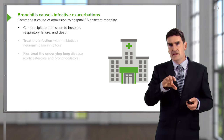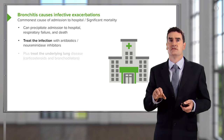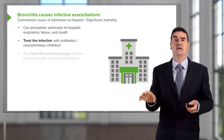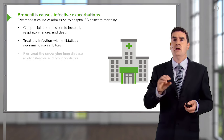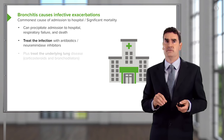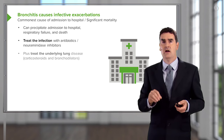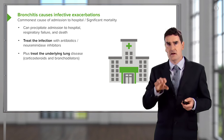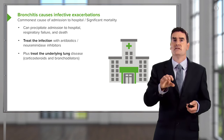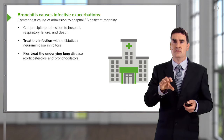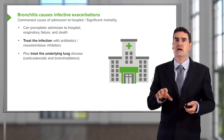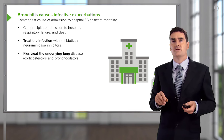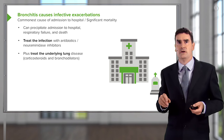In these circumstances, treatment with antibiotics — or a neuraminidase inhibitor if it's an influenza A infection — is likely to be very beneficial for the patient. Of course, you also need to treat the underlying lung disease in situations where an infective exacerbation has been precipitated by a bacterial infection of the trachea and bronchi.